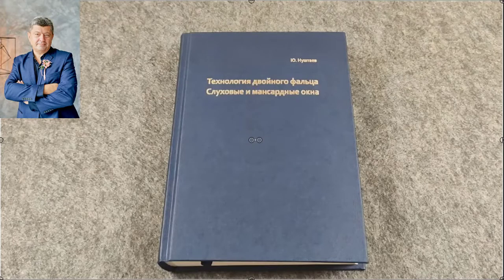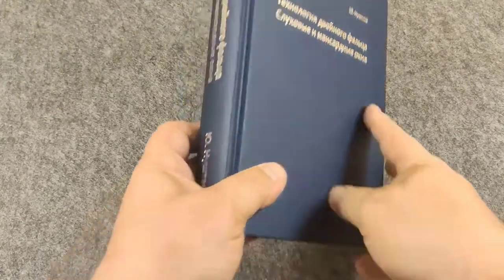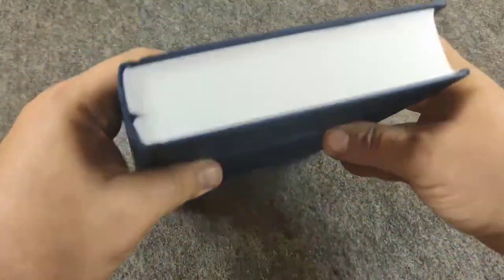Video review of Book 2 by Yuri Nushtov, Double Lock Standing Seam Technology. Dormers and Skylights belongs to the series of books, Double Seam Technology.